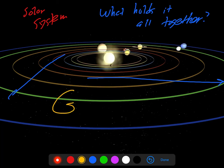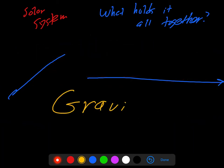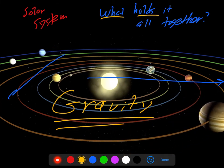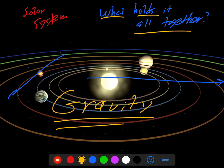The one word answer to this is of course, gravity. Gravity is what holds the solar system together for sure. So let me explain a bit more.